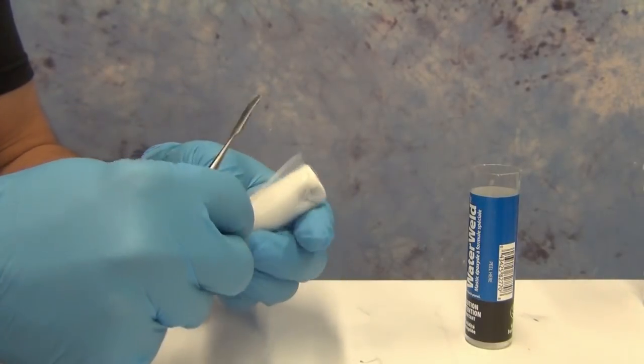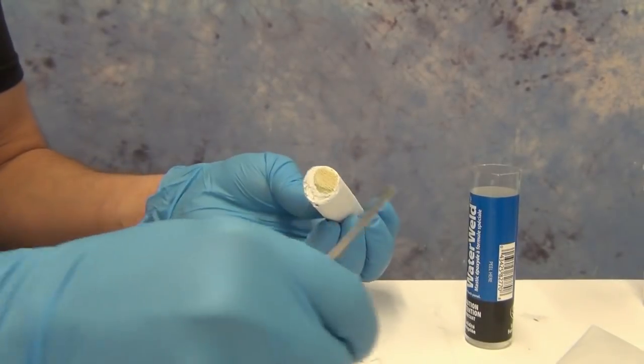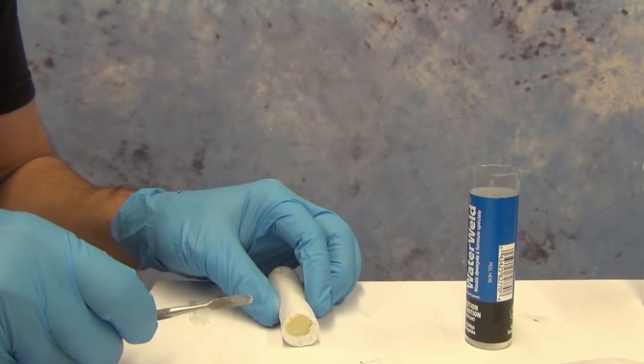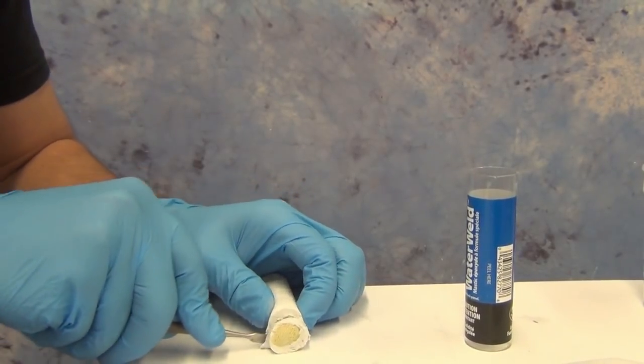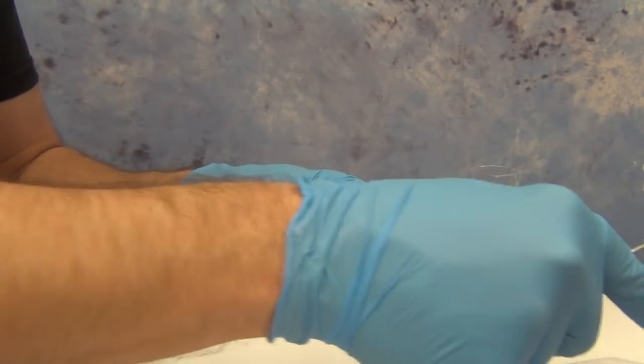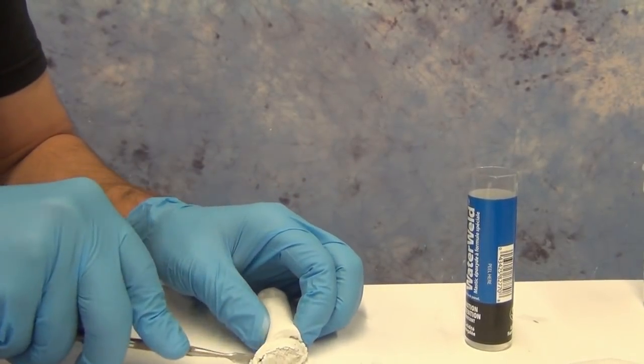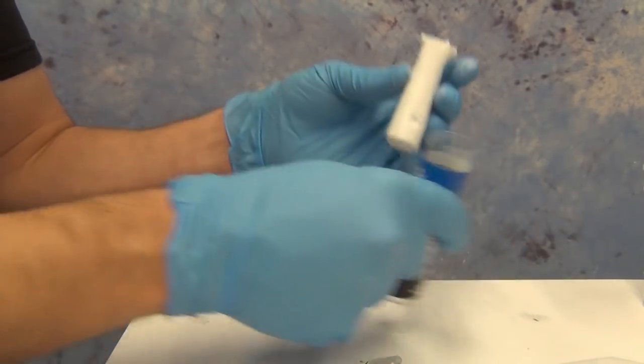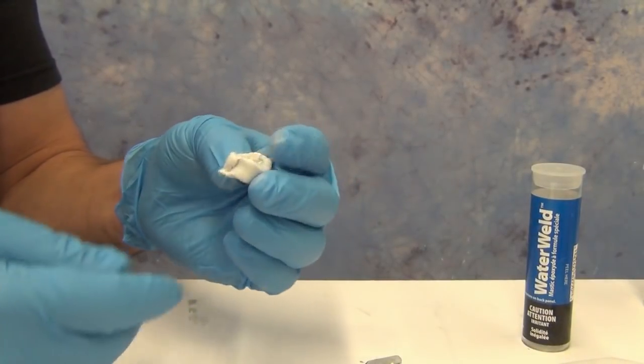The way it works is you take this out of the package and slice off a section of it. It's about the size of a roll of quarters and you just slice off a cross section and you knead it to activate it. Make sure you wear gloves and knead that just like firm water-based modeling clay. Once you knead it you have about five minutes to work with it before it starts to set up.